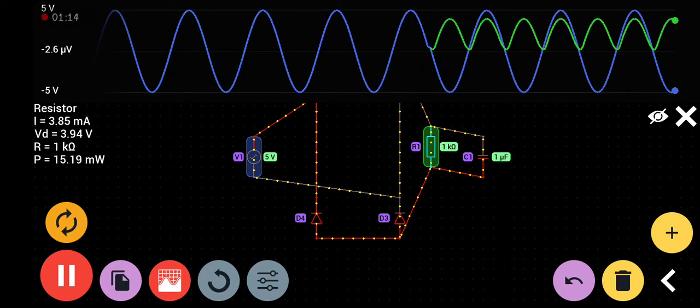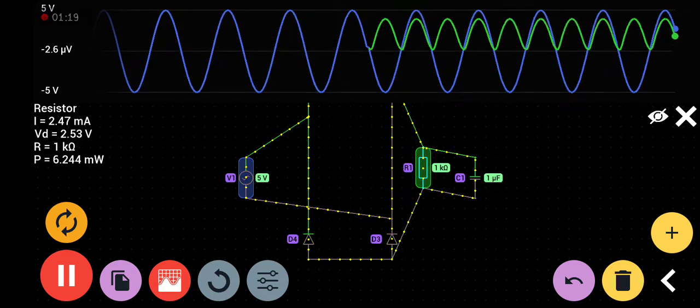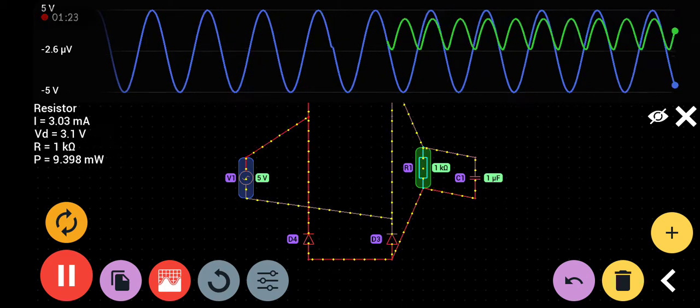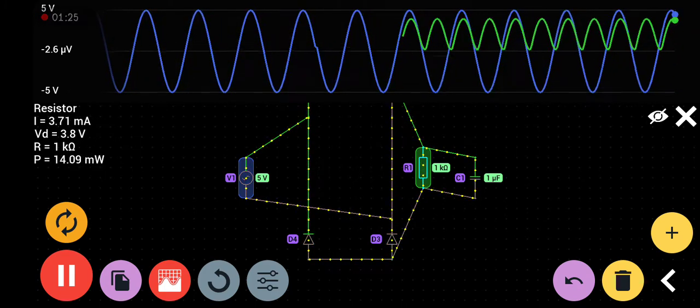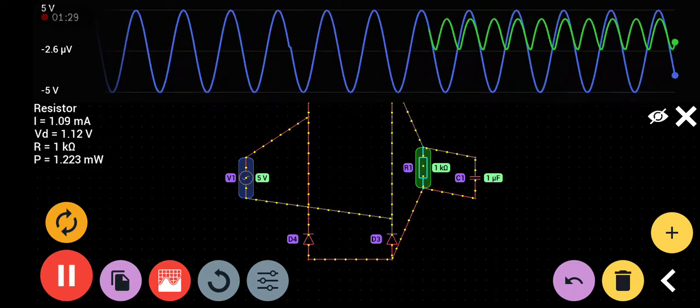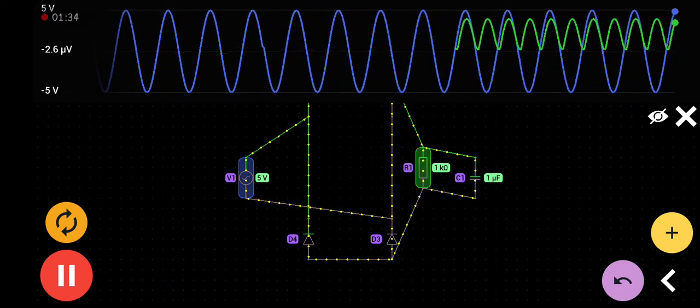reduce these ripples? We can change the value of resistor and capacitor and observe the ripples to see if they reduce or not. First, we change the value of resistor. We can change it here.